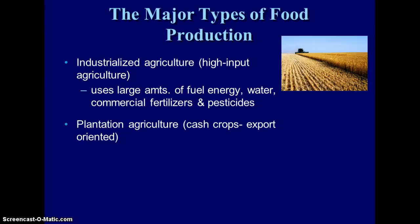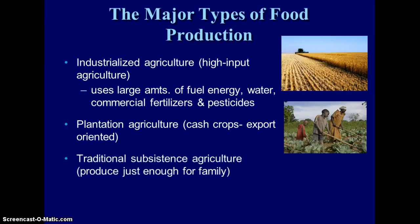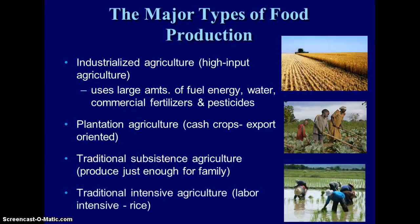Plantation agriculture is another type of agriculture where we export cash crops. Traditional subsistence agriculture is where you produce just enough food for your family — you're not selling any, you're not exporting any. And then traditional intensive agriculture is very labor intensive, and rice would be the best example of that.